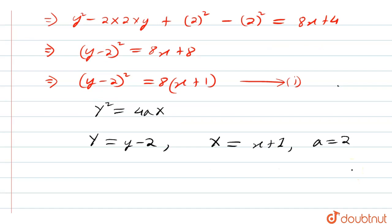Okay, now focus of parabola is given by capital X equal to a and capital Y equal to 0. So this is our focus. Now let us find this, that is from here we can write capital X, that means small x plus 1 equal to a that means 2, comma y that means small y minus 2 equal to 0.